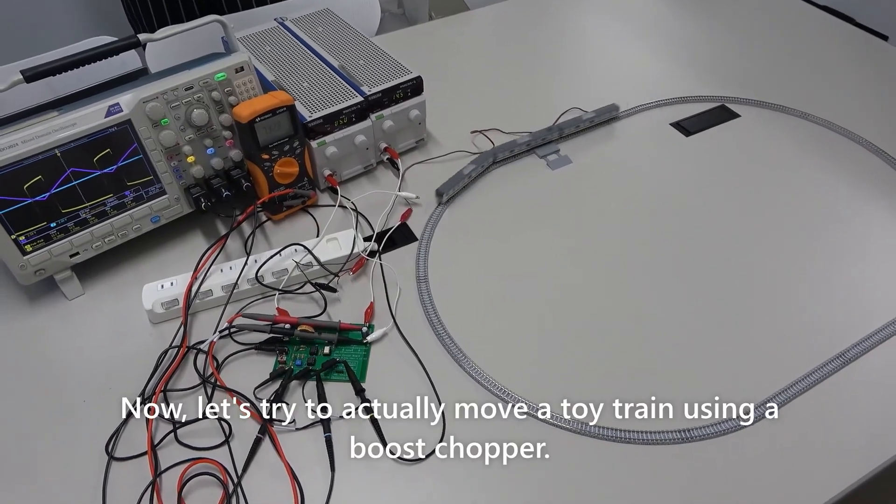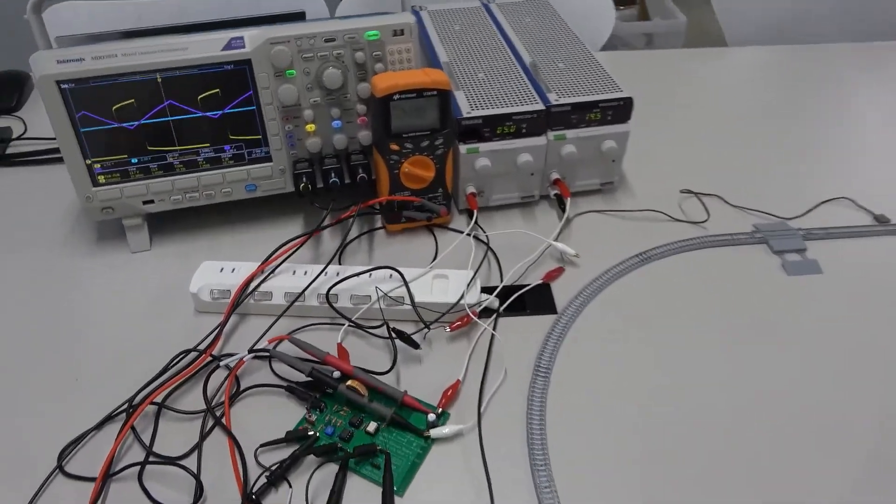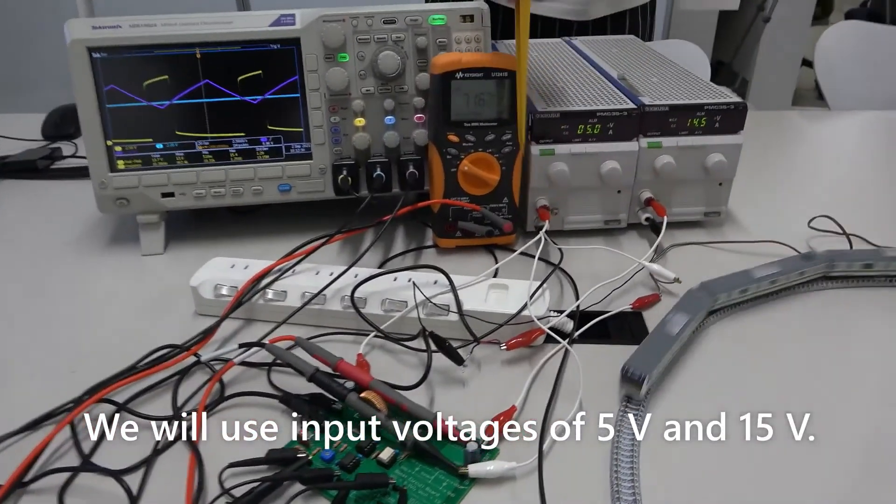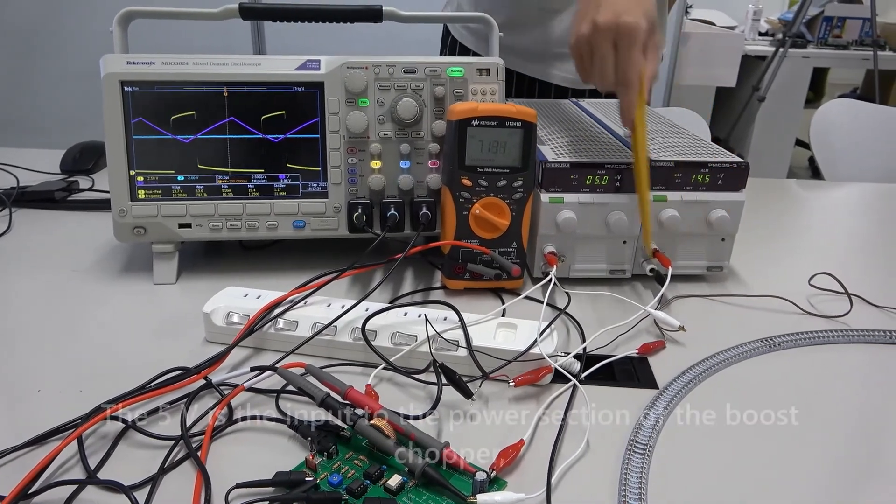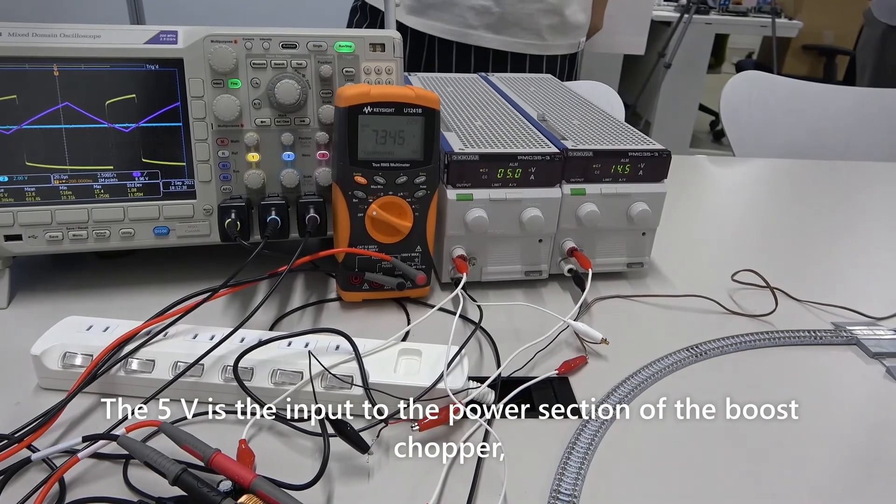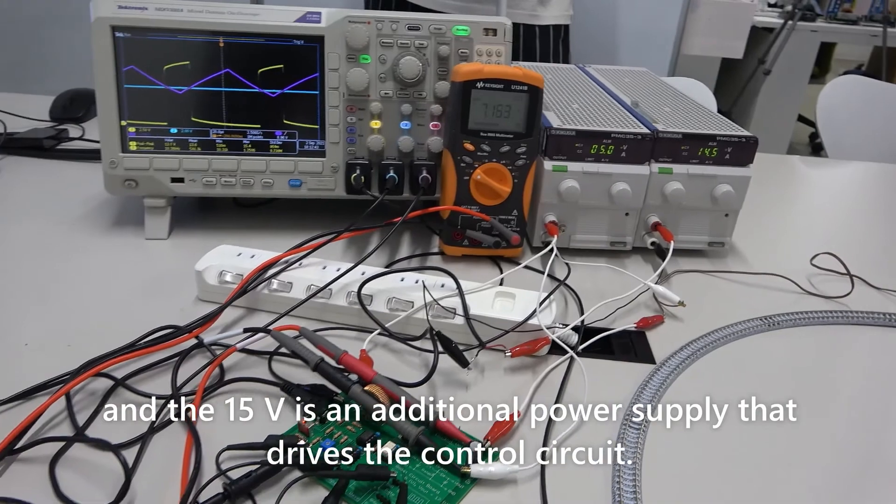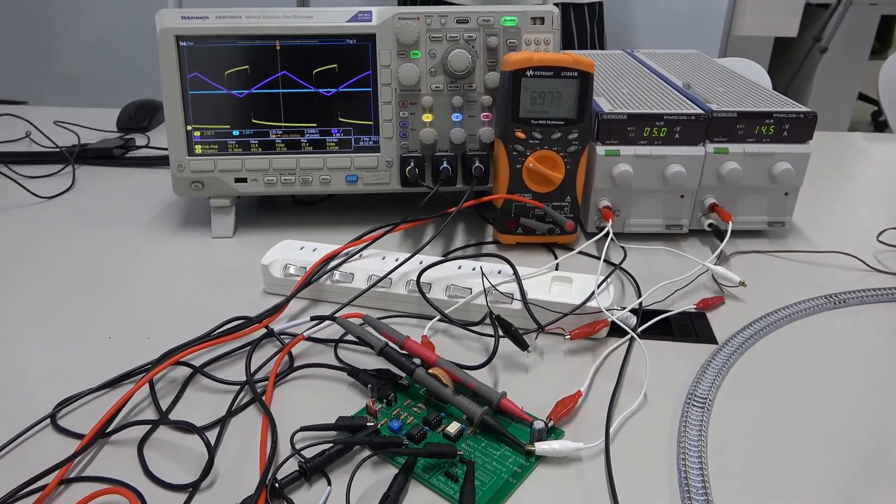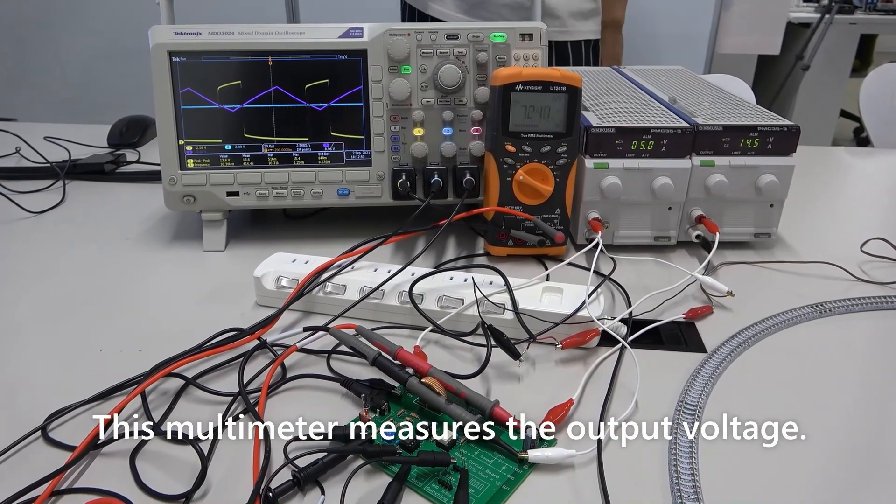Now, let's try to actually move a toy train using a boost chopper. We will use input voltage of 5V and 15V. The 5V is an input to the power section of the boost chopper. And the 15V is a power supply applied to the drive control circuit.